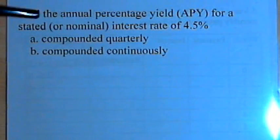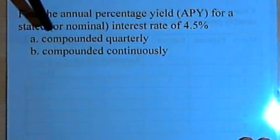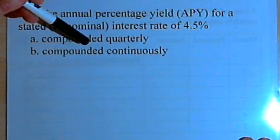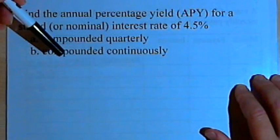Our problem says find the annual percentage yield for a stated or nominal interest rate of 4.5%, compounded quarterly and compounded continuously. Here's what this means.